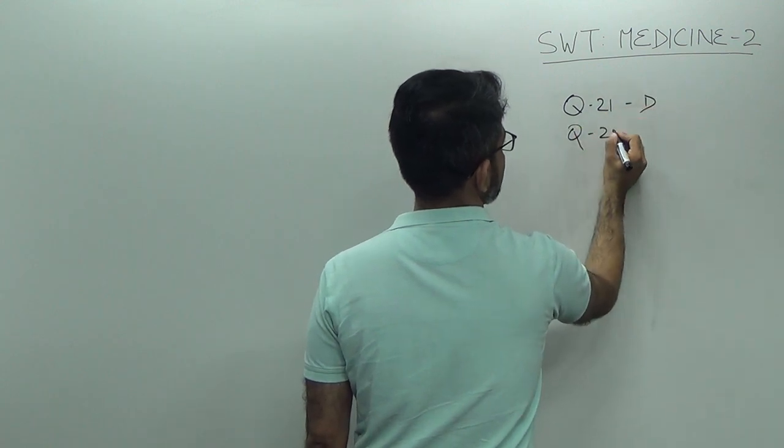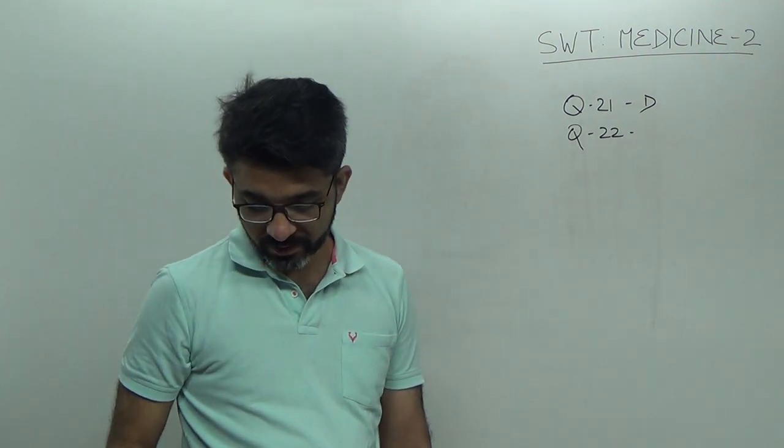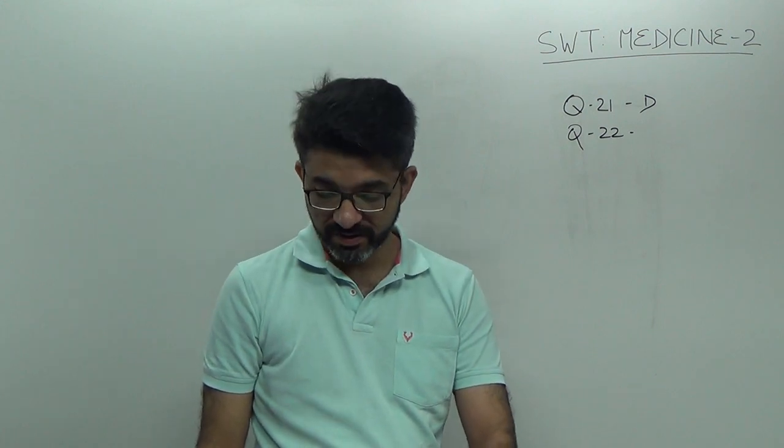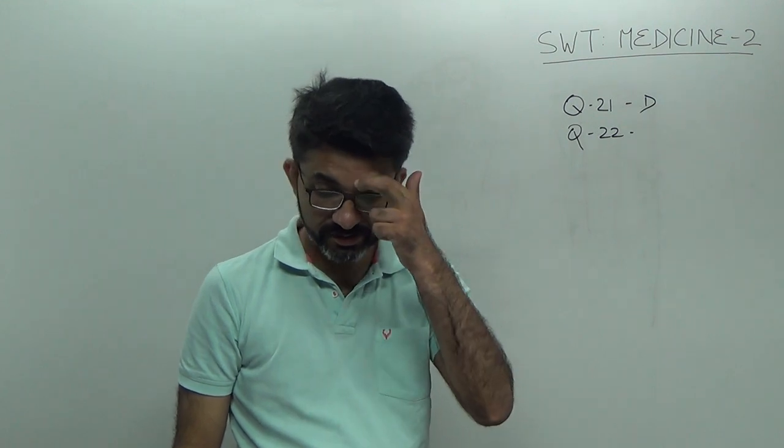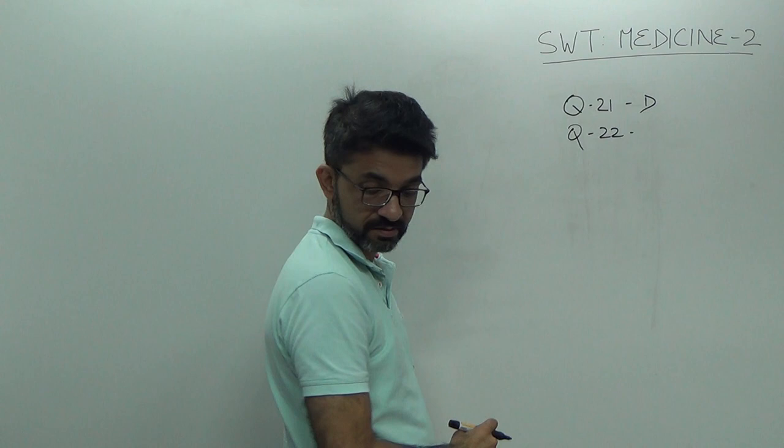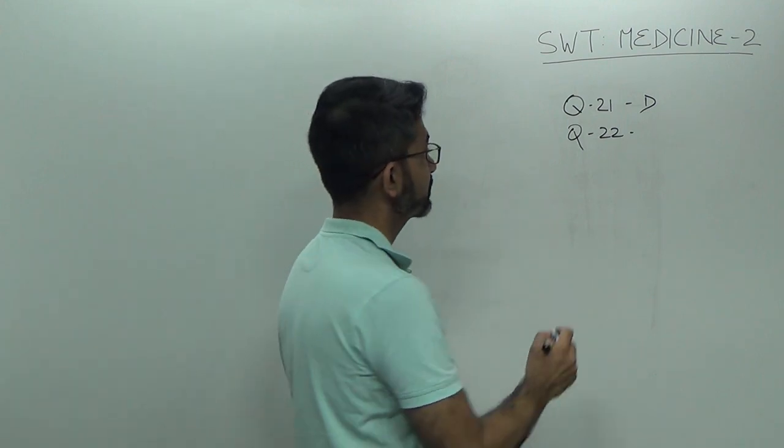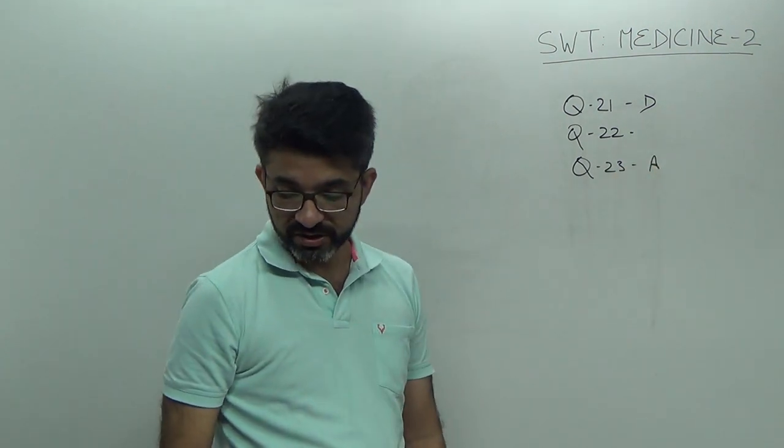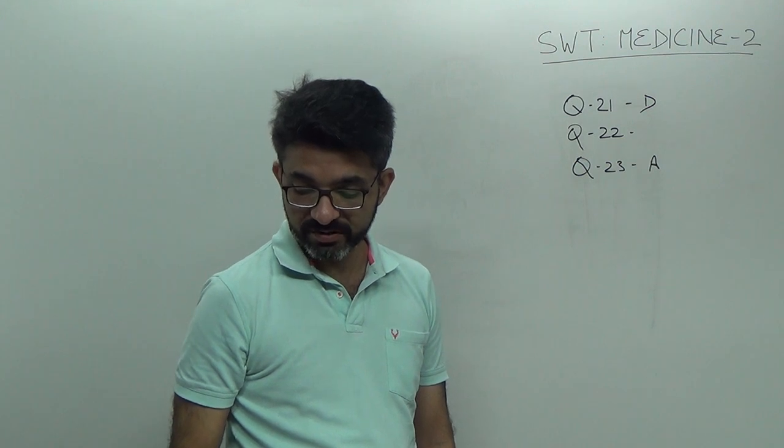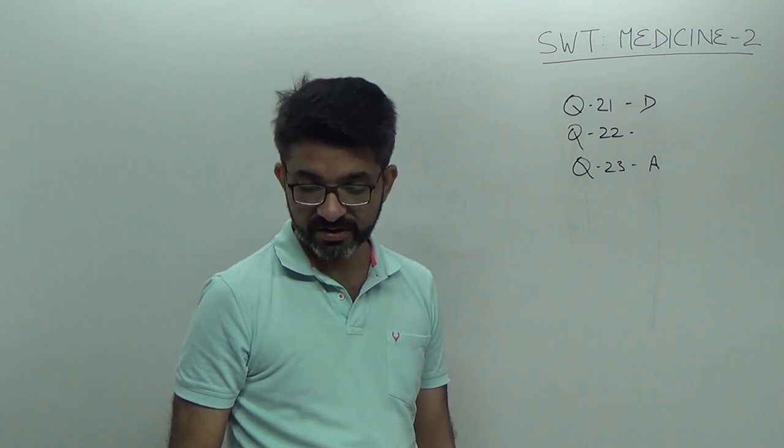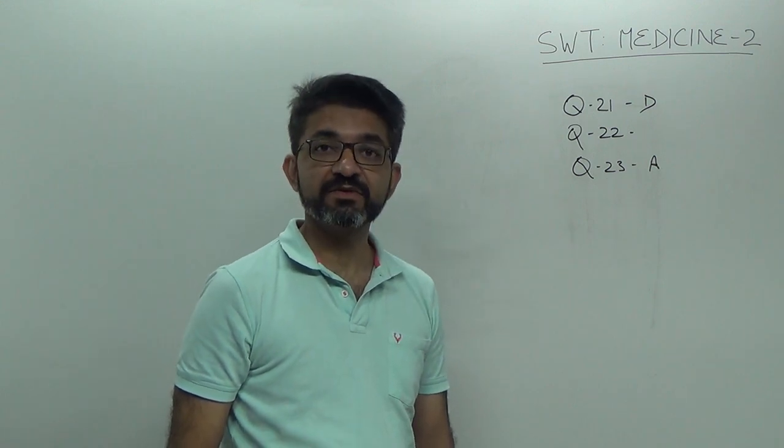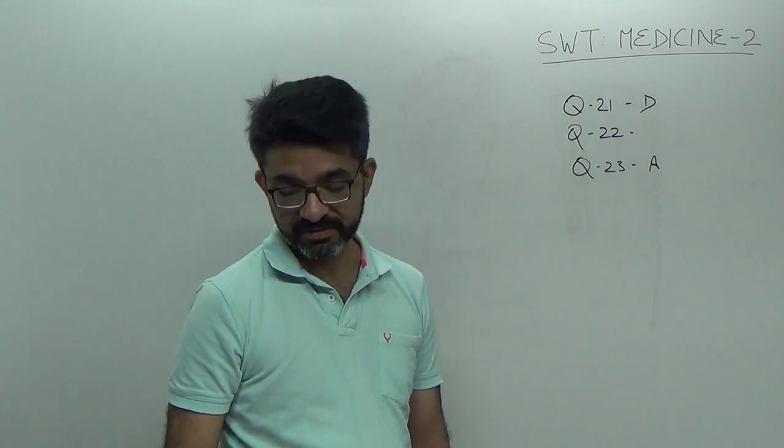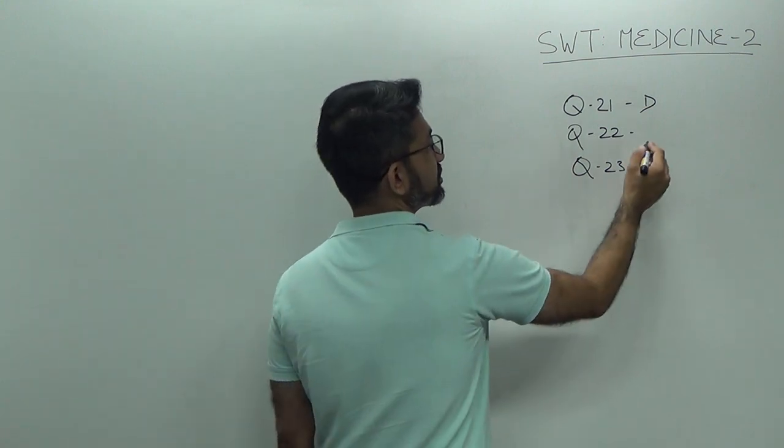Question number 22. Pheochromocytoma. Pheochromocytoma as a part of multiple endocrine neoplasia is associated with medullary carcinoma of thyroid. Remember it. The answer is A. Regarding question number 22. All of the following are features of MEN2B syndrome except pituitary tumor. In MEN2B syndrome we have involvement of thyroid with medullary carcinoma of thyroid. We have pheochromocytoma and we have mucosal neuromas. Right? So, the answer for question number 22 is A.